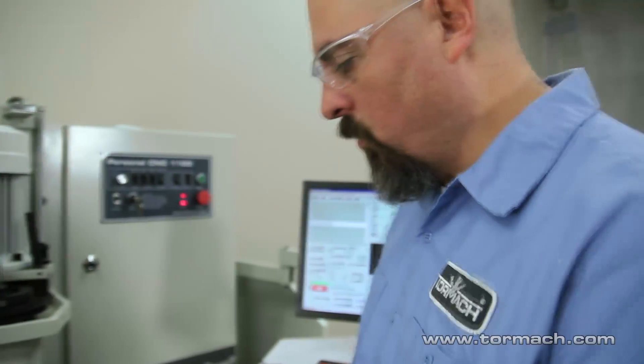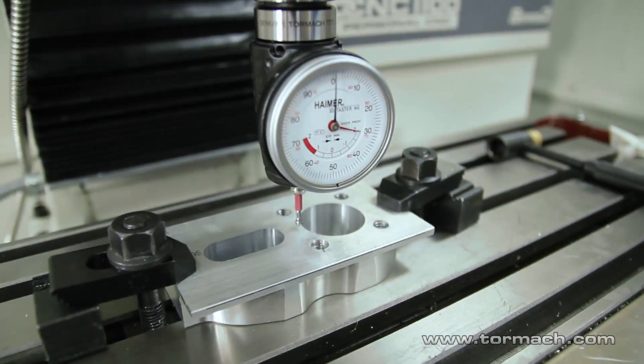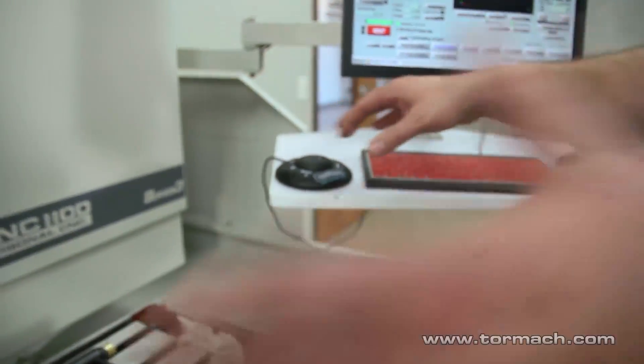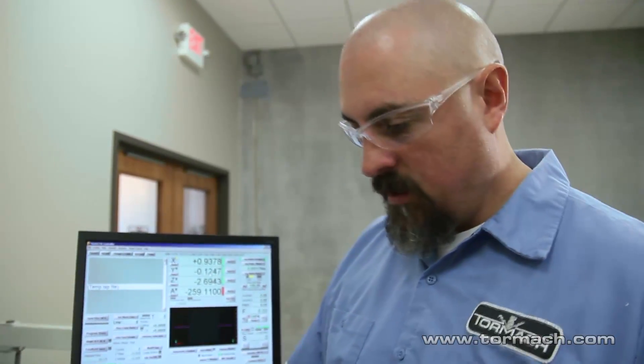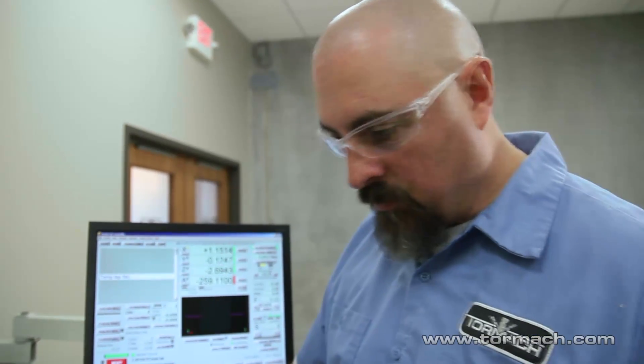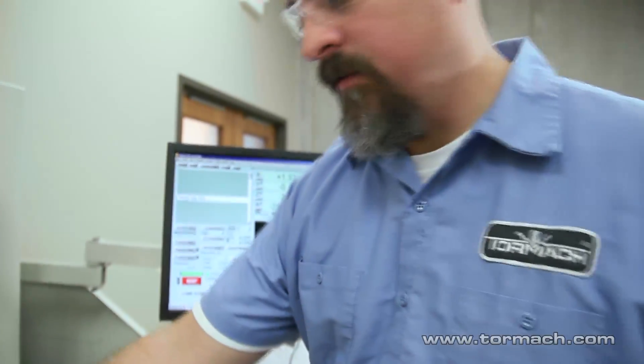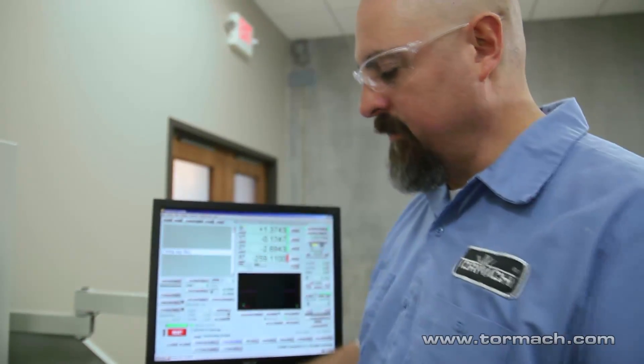Now we can pick up a hole with this also. And we do it the same way as we found the outside of the part, zero off each side. But what we'll do is we'll do X twice because you can see I'm shifted off the center of the hole. Because you're never going to be right on the center of the hole.